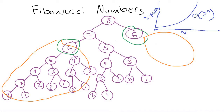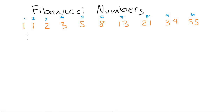Unlike Towers of Hanoi which is intrinsically exponential, this problem isn't — it's just the way we've implemented it with this redundant work. The lesson here is that the natural recursive solution can be super slow and unnecessarily so. Also important: problems don't have Big-O's — algorithms do. Just because you find an inefficient solution doesn't mean there's no better algorithm for the same problem.